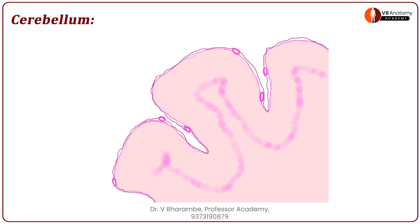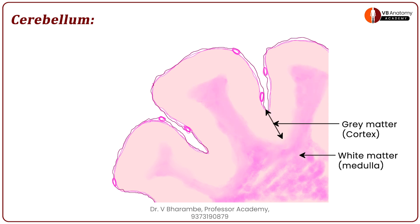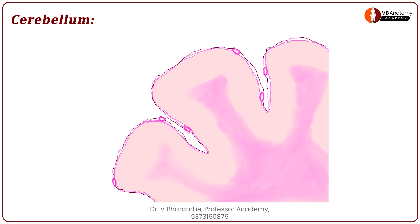Now we begin to divide the cerebellum into an outer cortex and an inner medulla by drawing this. Color it up nicely and gently rub it out a little. This inner structure is the medulla and whatever is left on the outside is the outer cortex. The inner medulla is the white matter; the outer cortex is the grey matter of the cerebellum.